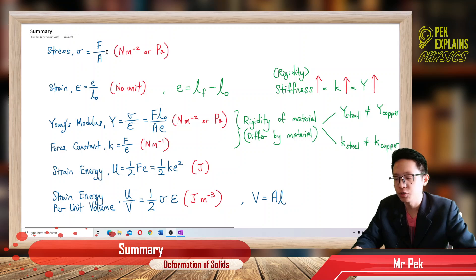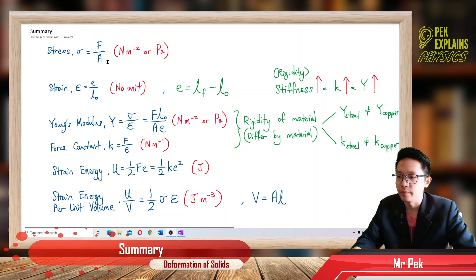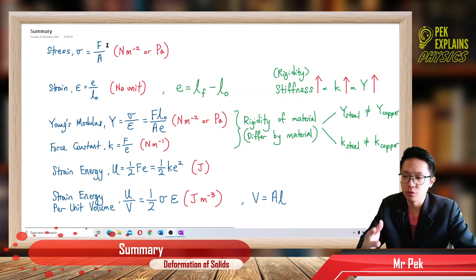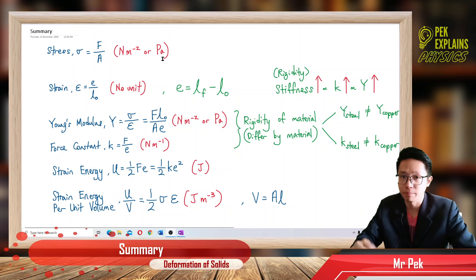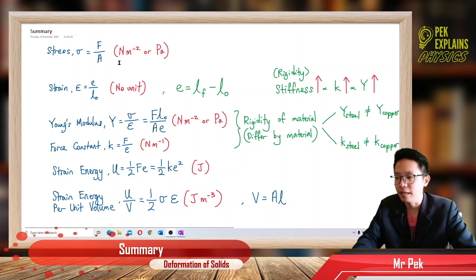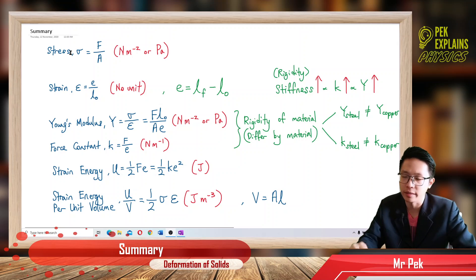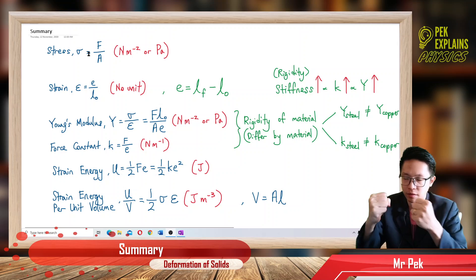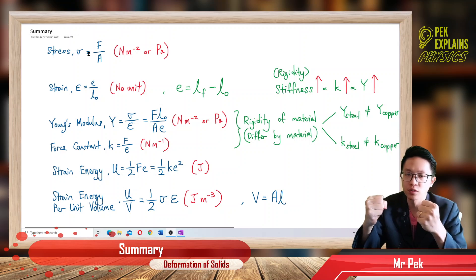If you look at this formula — force over area — it's the same formula as pressure. That's why pressure also has the unit Pascal. So stress is like pressure experienced by the steel wire under a force for extension. It has the same unit as Pascal.